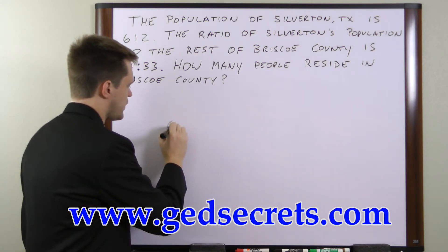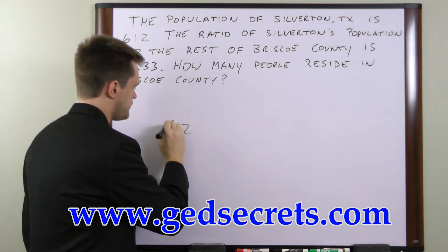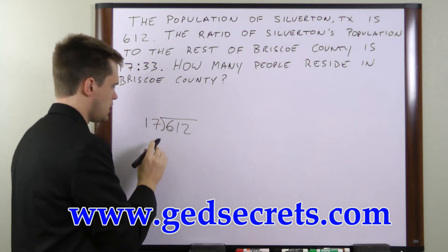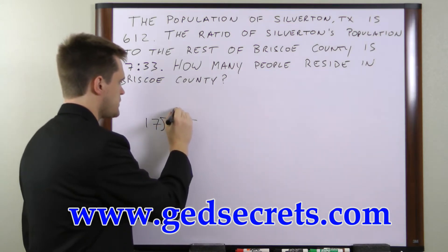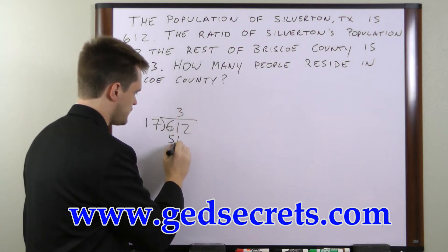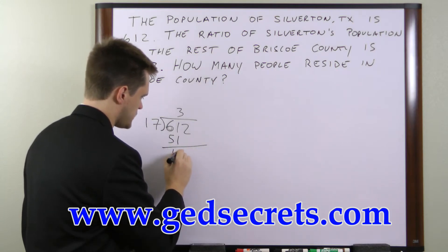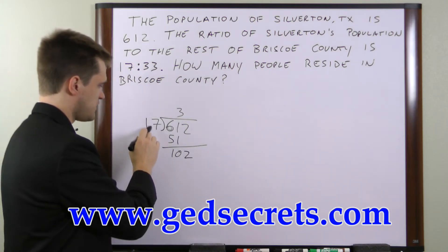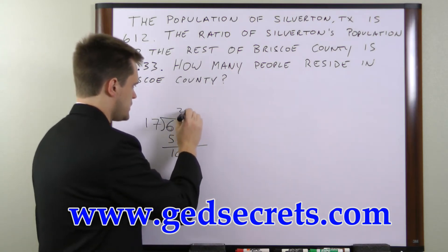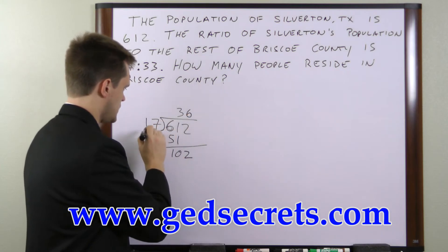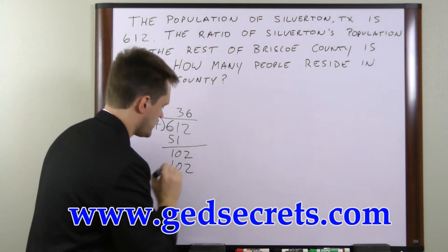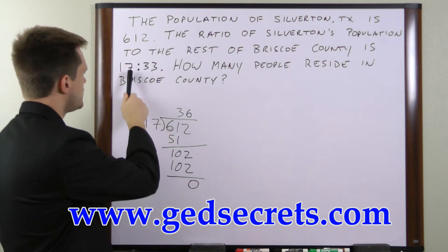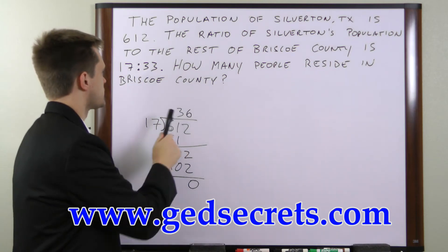We have 612 people in the town and we're going to divide it by 17. 17 goes into 61 three times. 3 times 17 is 51, so that leaves us with 10. We bring down the 2, giving us 102. 17 goes into 102 six times, and 6 times 17 is conveniently 102. So each number in the ratio represents 36 people.